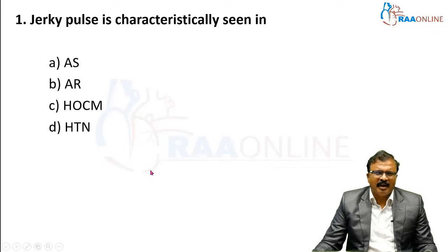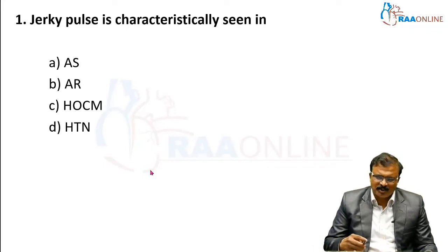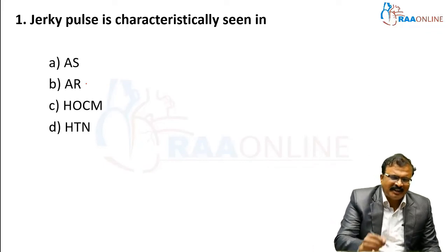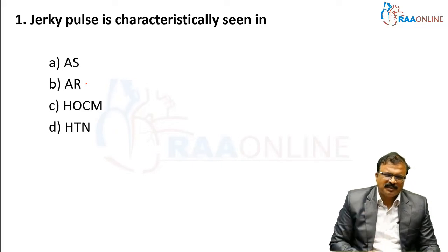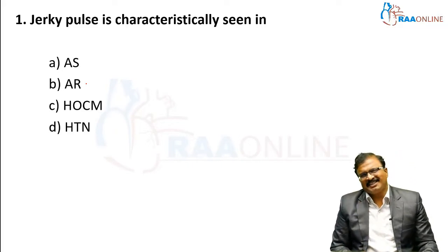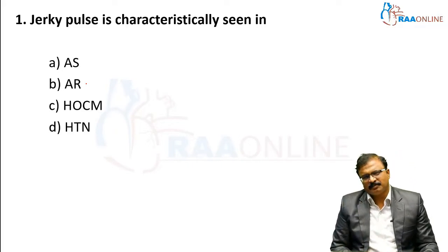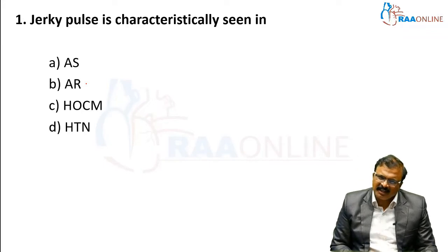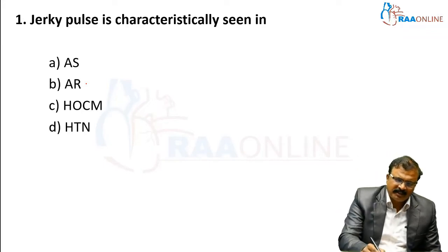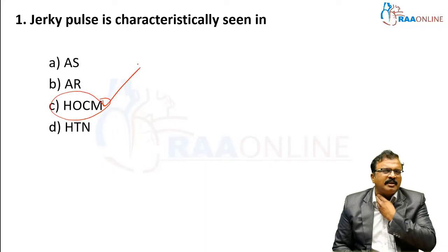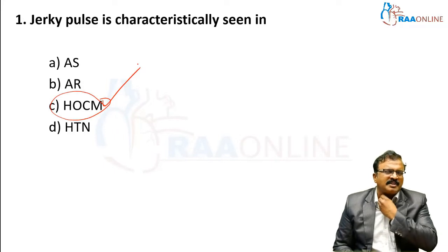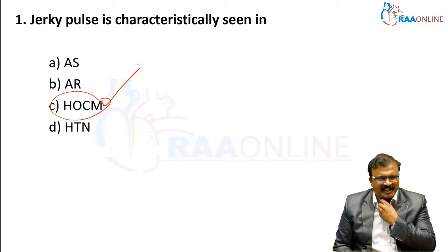The choices are AS (aortic stenosis), aortic regurgitation, HOCM, or systemic hypertension. The answer is very clear — it is HOCM. Carotid jerk, jerky pulse, brisk carotid pulse is characteristic of HOCM.